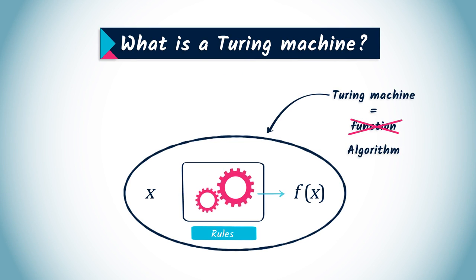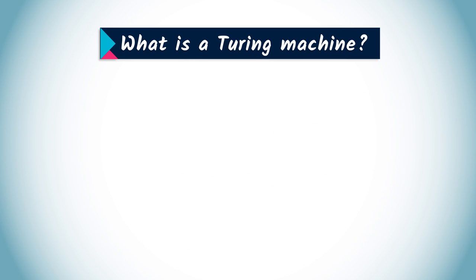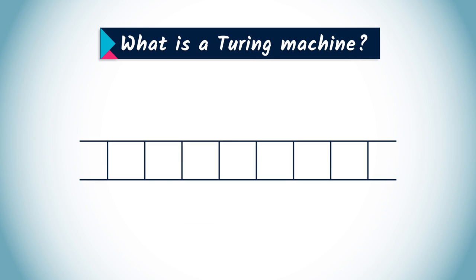Let's have a look at how it works. A Turing machine has access to an infinite tape divided into cells containing a symbol. A cell can contain three symbols, a zero, a one, or a blank character.